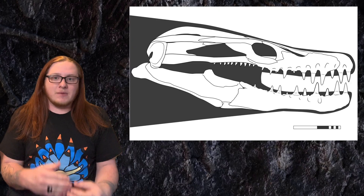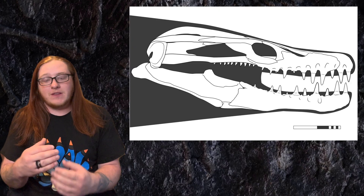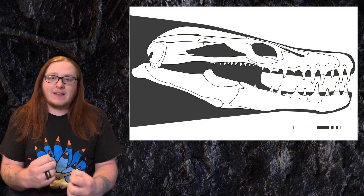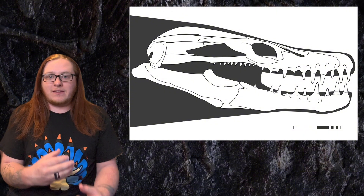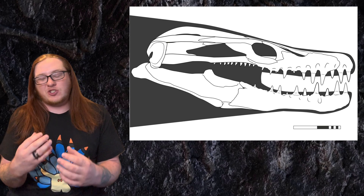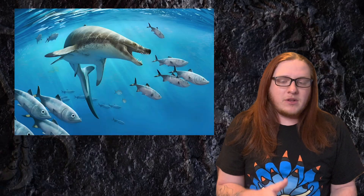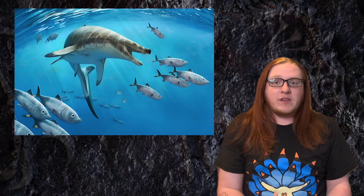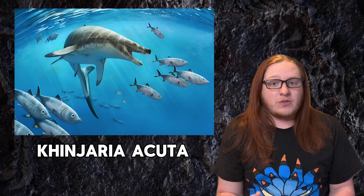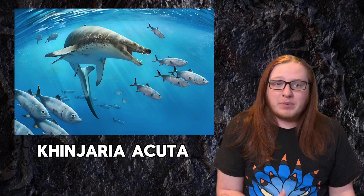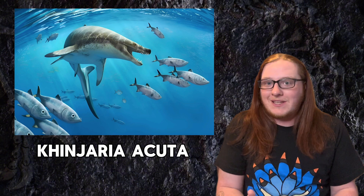That leads me back to the whole reason why I wanted to make this video — the discovery of a mosasaur found in Morocco that lived towards the end of the Cretaceous period. Mosasaurs were ridiculously diverse, and this new species highlights that. It had large, dagger-like teeth sitting in a relatively shorter, blunter jaw, indicating an incredibly powerful and dangerous bite. When comparing this specimen, given the name Kinjaria Okuda, to other mosasaurs that lived at the same time in the same place, you can see the diversity just through the teeth alone.